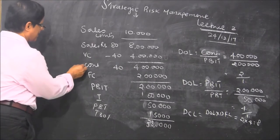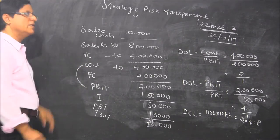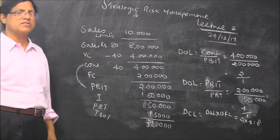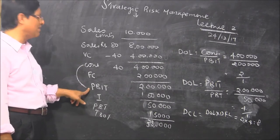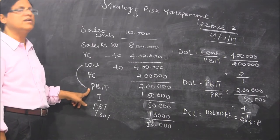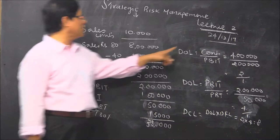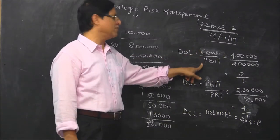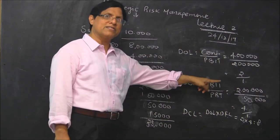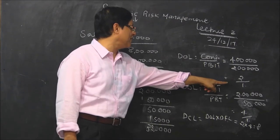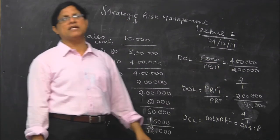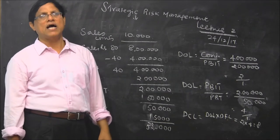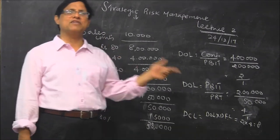You see how to measure it, very simple. It arises because of fixed cost, so contribution divided by PBIT is the formula. Now you can see contribution is 4 lakhs, PBIT is 2 lakhs, 2 times. That means for every 1 rupee of PBIT the contribution generated is 2 times, and 2 minus 1 is the fixed cost.